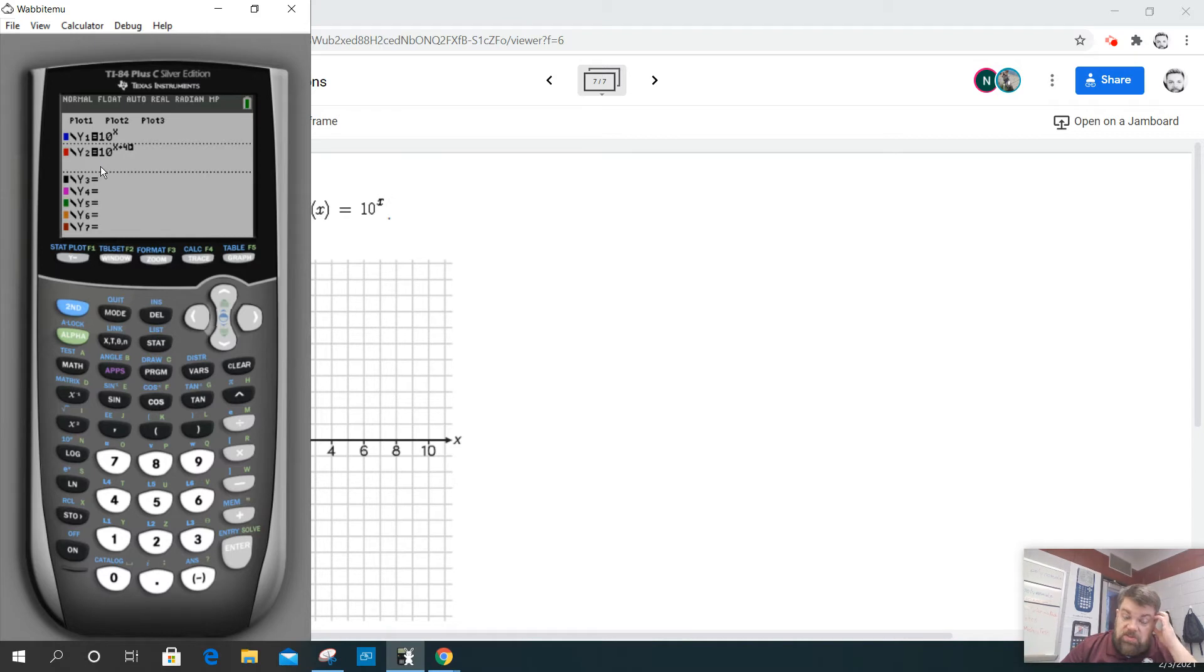It's called a composite function. So instead of being 10 to the x, which is f(x), it's going to be x plus 4. So now when I graph this, what you'll see is the blue graph is the original function f(x). And then shifted four units to the left will be the red one, but it's basically the same thing.